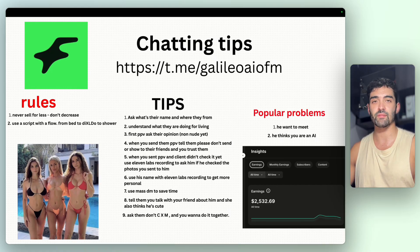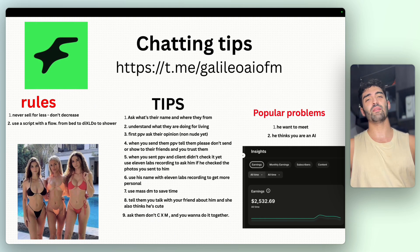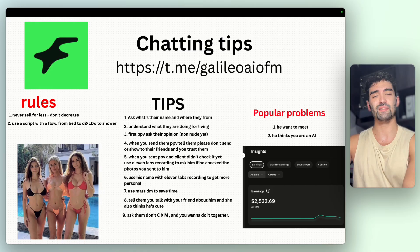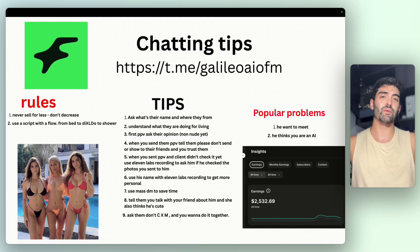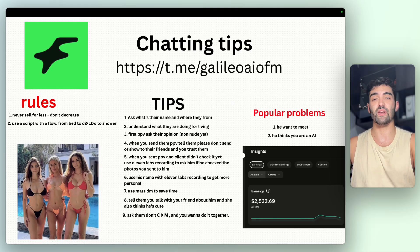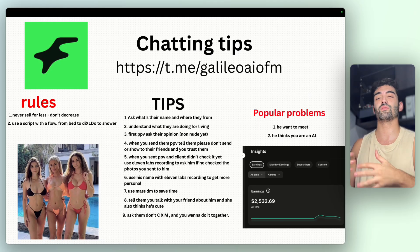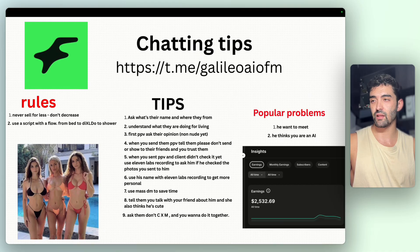Another common problem: fans accusing you of being an AI. When that happens, respond playfully — something like 'Oh, that's a great compliment, do you think I'm perfect?' You can also say 'Sometimes I use AI tools to enhance my images, I think they look better — but do you think I look natural enough?' Just respond in a fun, girly way to deflect the question.